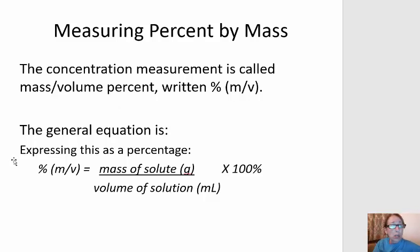So here's the general equation: percent m/v equals mass of solute in grams over volume of solution in milliliters, multiplied by 100%.